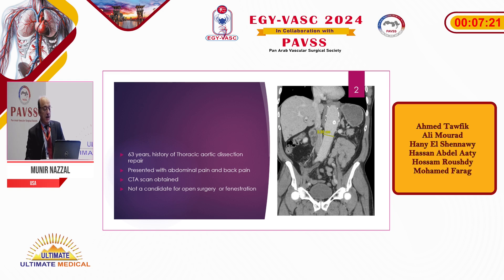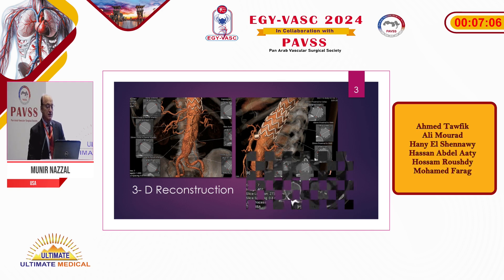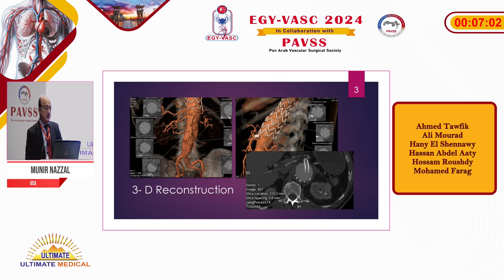The neck of the aneurysm was very large — about 38 millimeters — so he is not a candidate for regular endovascular repair. This is the 3D reconstruction of the aneurysm, as you can see here. Because of his previous repair, he had an SMA stent and a combined origin for the superior mesenteric artery and the celiac artery, and the stent was just floating in the aorta, making fenestration in that area very difficult to consider.